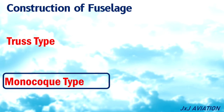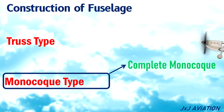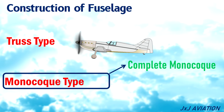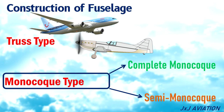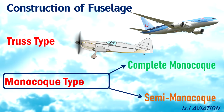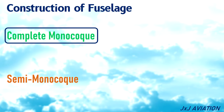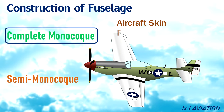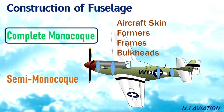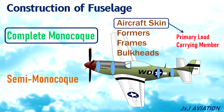Monocoque type. There are two monocoque types of fuselage constructions: a complete monocoque and a semi monocoque. A complete monocoque consists of aircraft skin, formers, frames, and bulkheads. Here, the skin is the primary load carrying member, so the strength of the skin plays a major role in this type of construction.